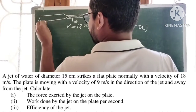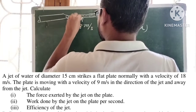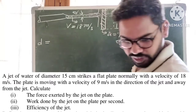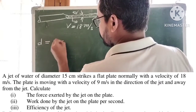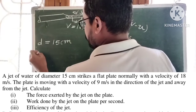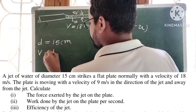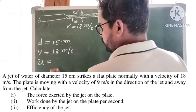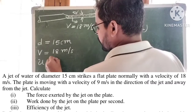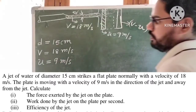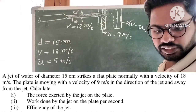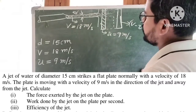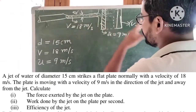The diameter of the jet, D, is equal to 15 centimeters. The velocity of the jet, V, is 18 meters per second. The velocity of the moving plate, U, is 9 meters per second — in the direction of the jet and away from the jet.